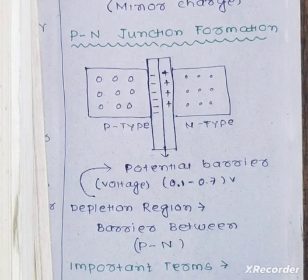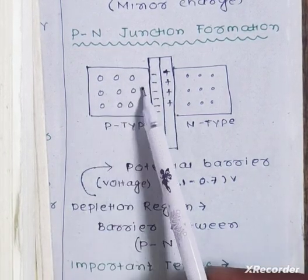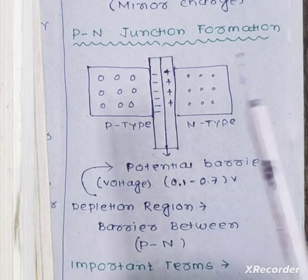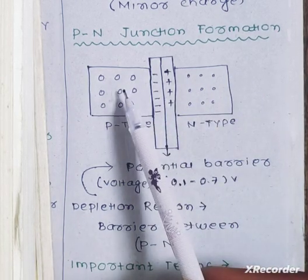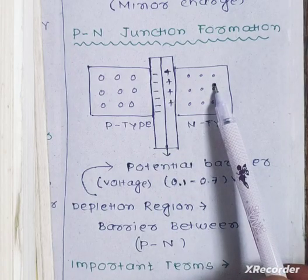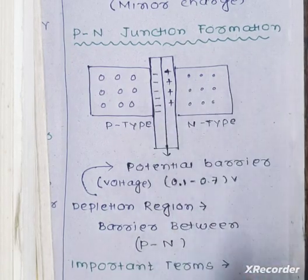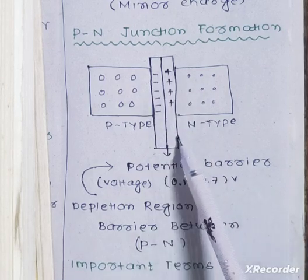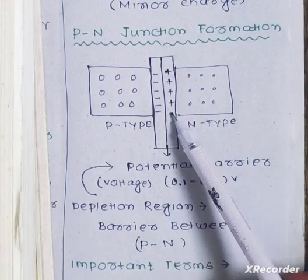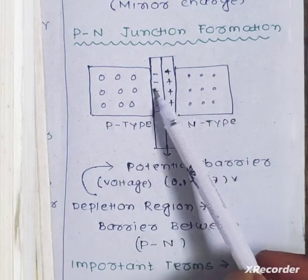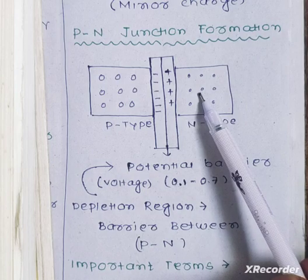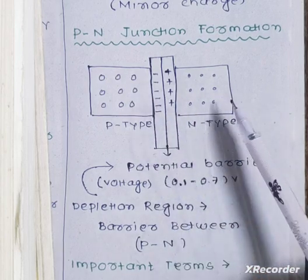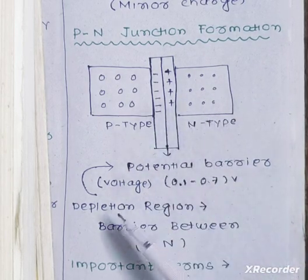A PN junction means that one side is a P-type semiconductor and the other side is an N-type semiconductor. When they are joined, a depletion region is formed at the junction. In the initial neutral condition, due to the force of attraction between negative and positive ions, a barrier known as the depletion region is formed.